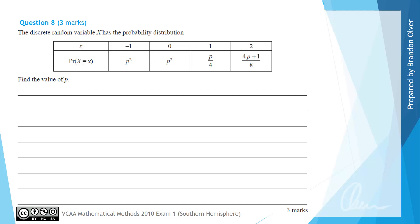We know that the sum of all of those probabilities needs to add up to 1. So we have p squared plus p squared which will give 2p squared plus p divided by 4 plus 4p plus 1 divided by 8 equals 1.